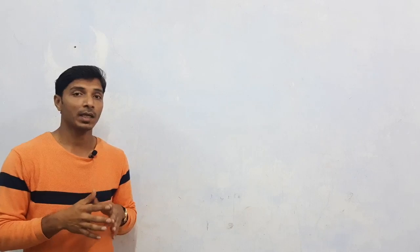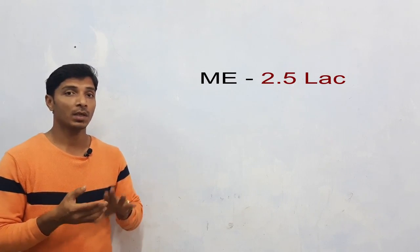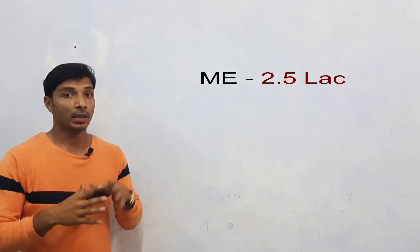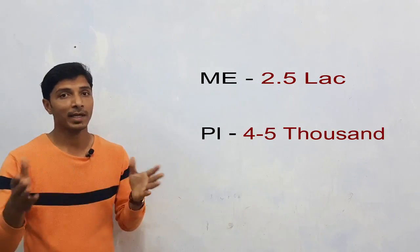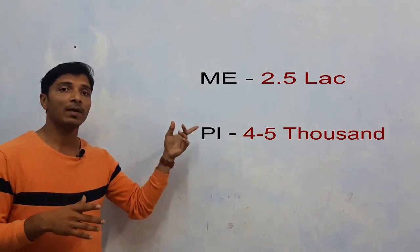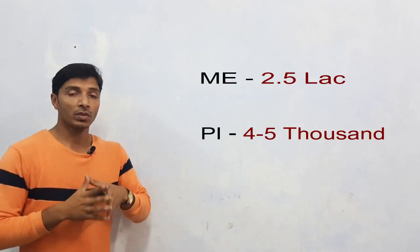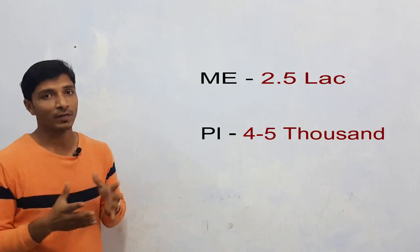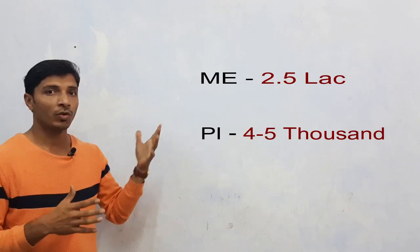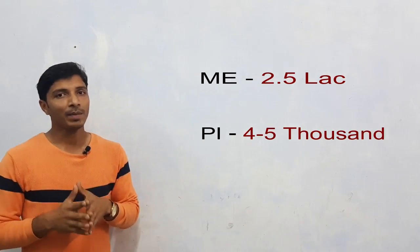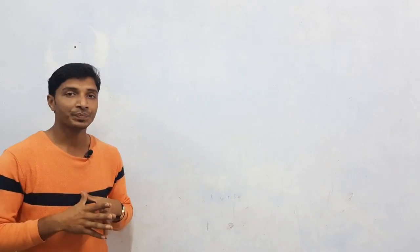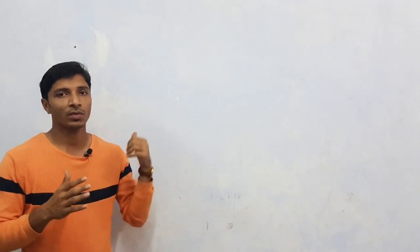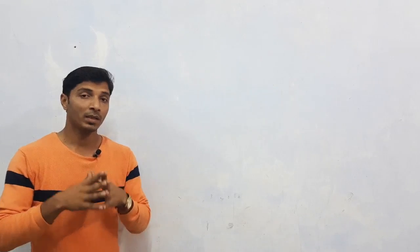If you look at the statistics, last year around 2.5 lakh students appeared for GATE in Mechanical Engineering (ME), but this count is only 4 to 5 thousand for Production and Industrial Engineering. So if you want to pursue a Master's in production-related areas, applying through PI gives a higher possibility of qualifying, and the cut-off mark is also less. However, if your aim is PSUs, then apply through ME, because almost all PSUs consider only the Mechanical Engineering GATE score.